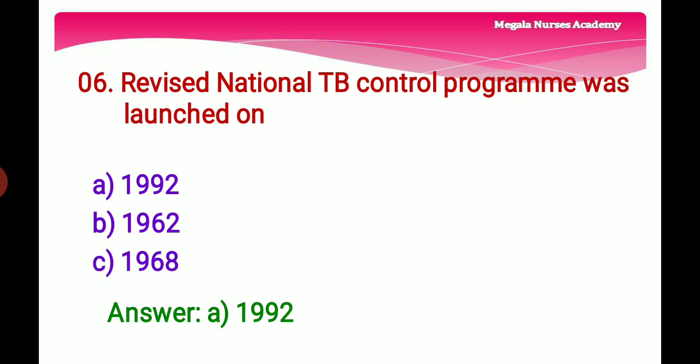Sixth question: The Revised National TB Control Program was launched on — Option A: 1992, Option B: 1962, Option C: 1968. The right answer is Option A, 1992, because the Government of India revitalized the National TB Program as the Revised National TB Control Program in 1992.